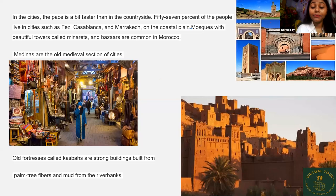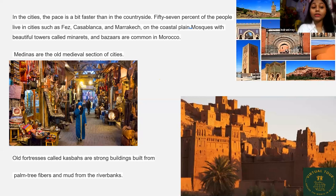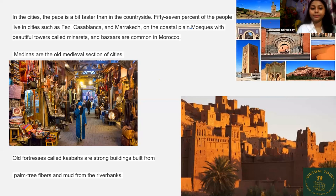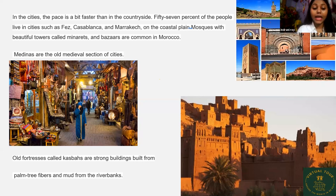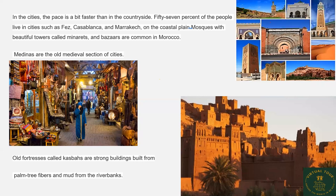We are looking at national dress. On the coastal plain, mosques with beautiful towers called minarets and bazaars are common in Morocco. In the right-hand side you can see beautiful pictures of mosques and towers. Medinas are the old medieval sections of the cities. Old fortresses called kasbahs are strong buildings built from palm tree fibers and mud from the river.